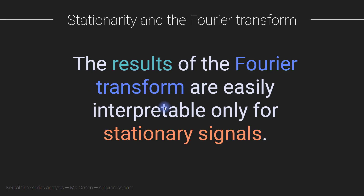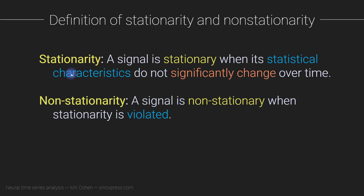That doesn't always mean that the results of the Fourier transform are easy to look at and easy to interpret just based on visual inspection. My claim is that the amplitude spectrum or power spectrum is interpretable only for stationary — or mostly stationary — signals. So what does this term mean? A signal is stationary when its statistical characteristics do not significantly change over time.